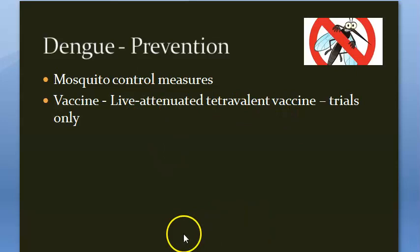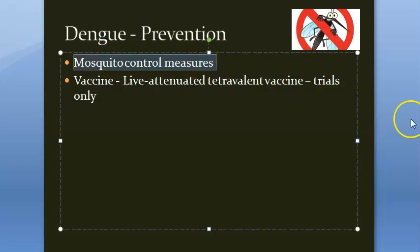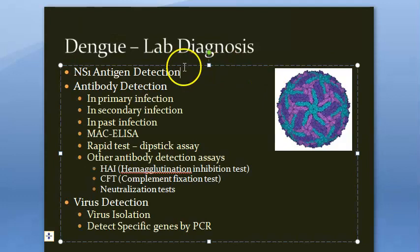Prevention of dengue involves mosquito control measures studied in community medicine: environmental control, sanitation, piped water, spraying insecticides, using mosquito nets, and mosquito repellents. Vaccination is still in the trial stage, so it cannot be mentioned as a current measure.